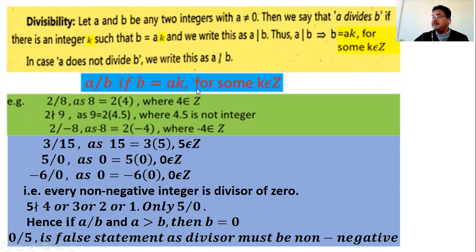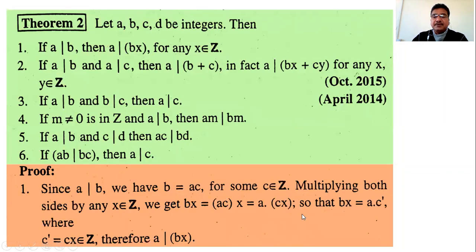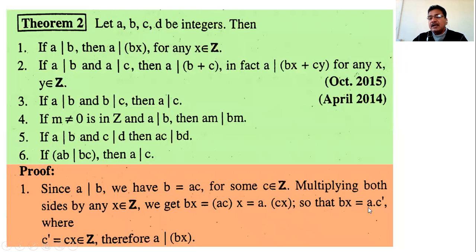Therefore a divides bx. This uses the definition of divisibility: a divides b if and only if b = ak for some k in Z, that is, b is expressed in the form a times some integer. This is a two-way statement — if a divides b then b = ak, and if b = ak for some k in Z then a divides b. Here bx is expressed as a times some integer, so by this definition a divides bx.